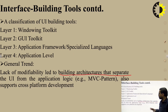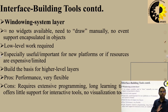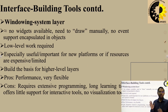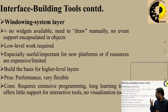The MVC pattern also supports cross-platform development. The windowing system layer has no wizards available — need to draw manually, no event support encapsulated in objects, and low-level work is required. It is especially useful for new platforms or when resources are expensive. Pros: good performance and flexibility. Cons: requires extensive programming and a long learning curve.